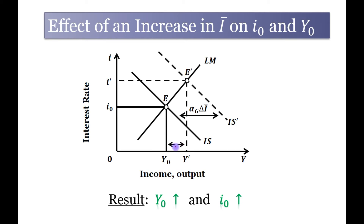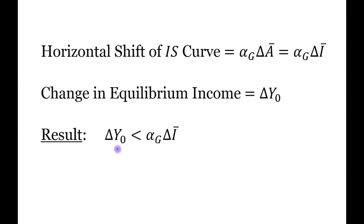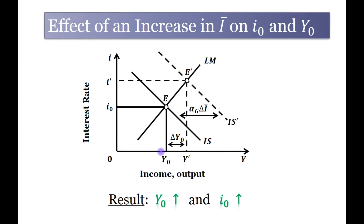However, the change in equilibrium income ΔY₀ is less than the horizontal shift of the IS curve. You can see in this figure that the change in equilibrium income is less than the horizontal shift of the IS curve.